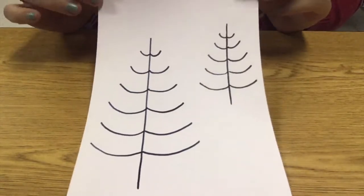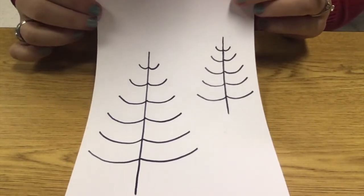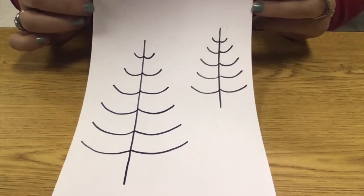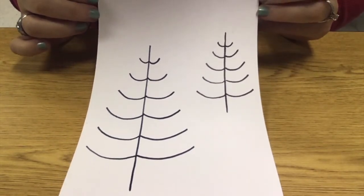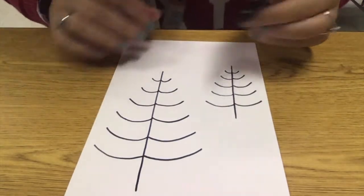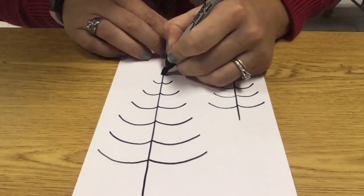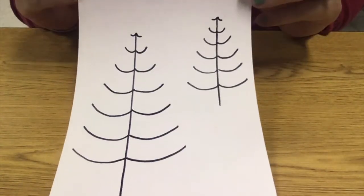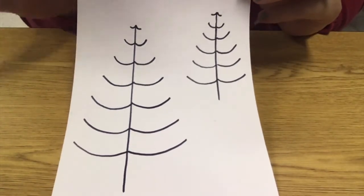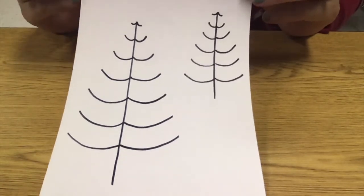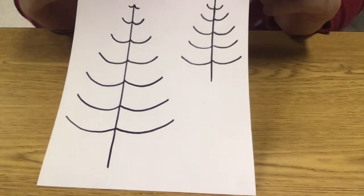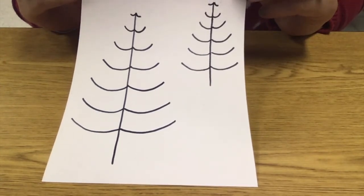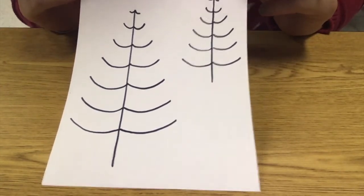All right, so those are real simple. You can add more to these if you'd like to make them look more like trees. Like I said, I kind of want simple ones. I might even add real quick up at the top, just two little ones at the top just to really force that tree look to it. But now that we have this very simple tree drawing done, we can do the fun part, which is the tissue paper art.